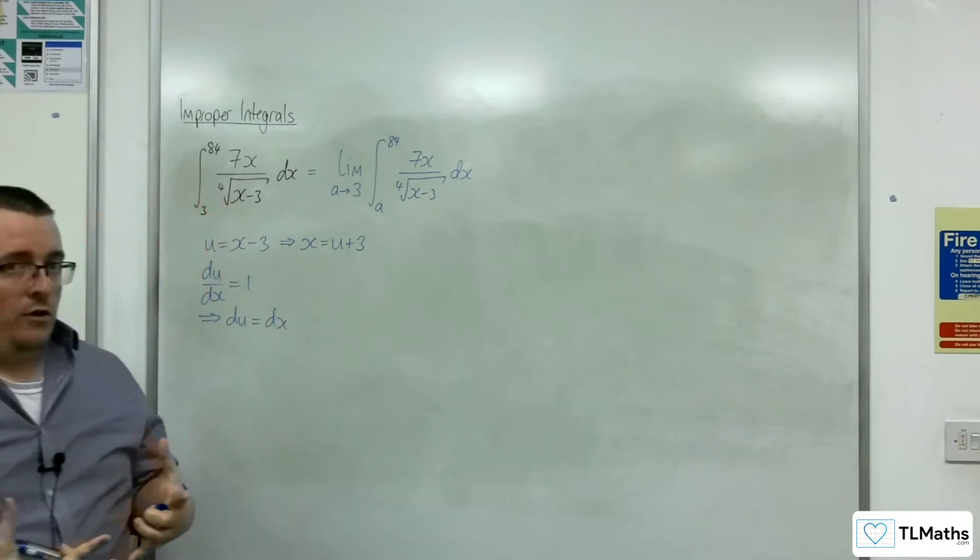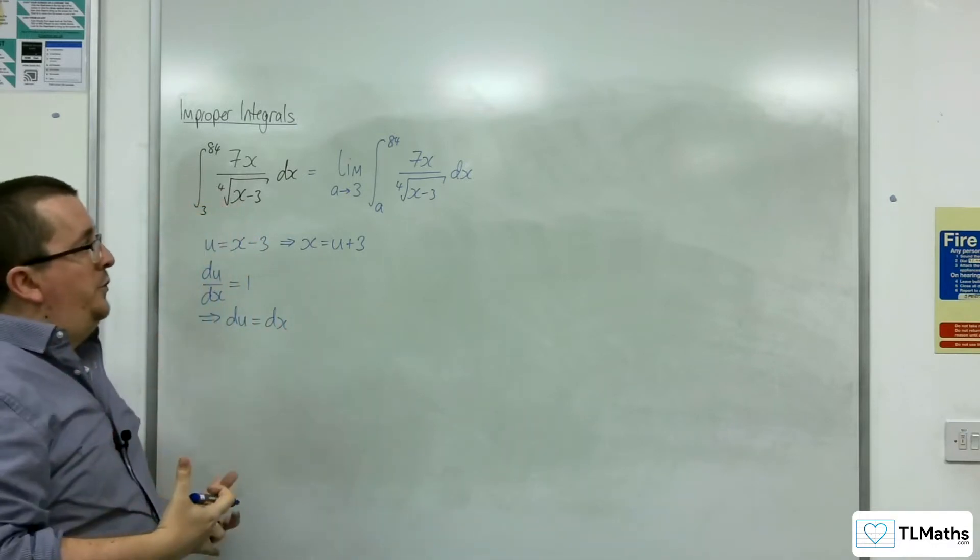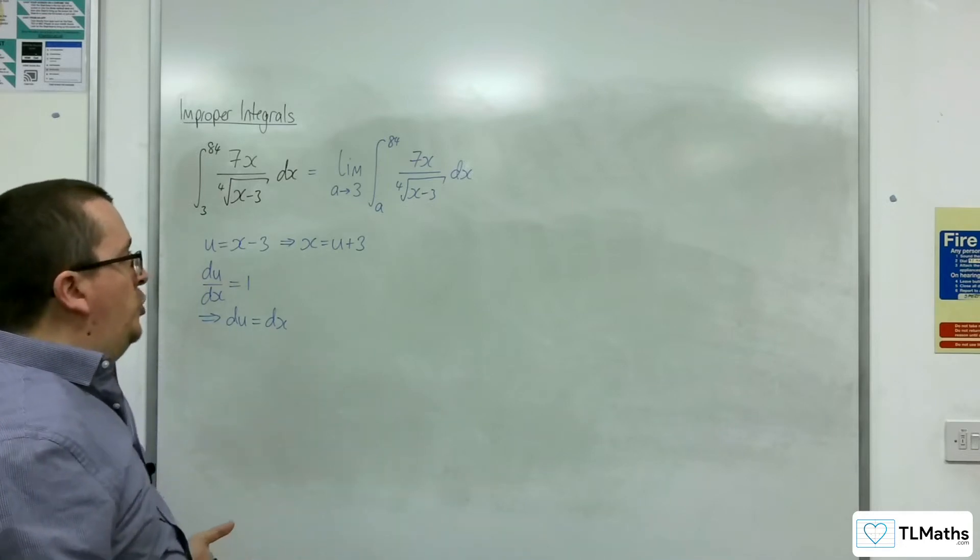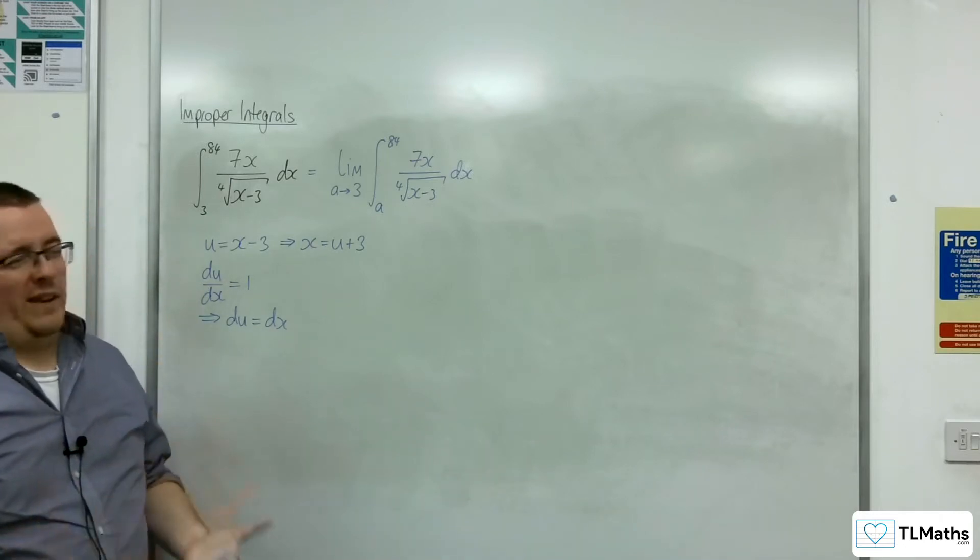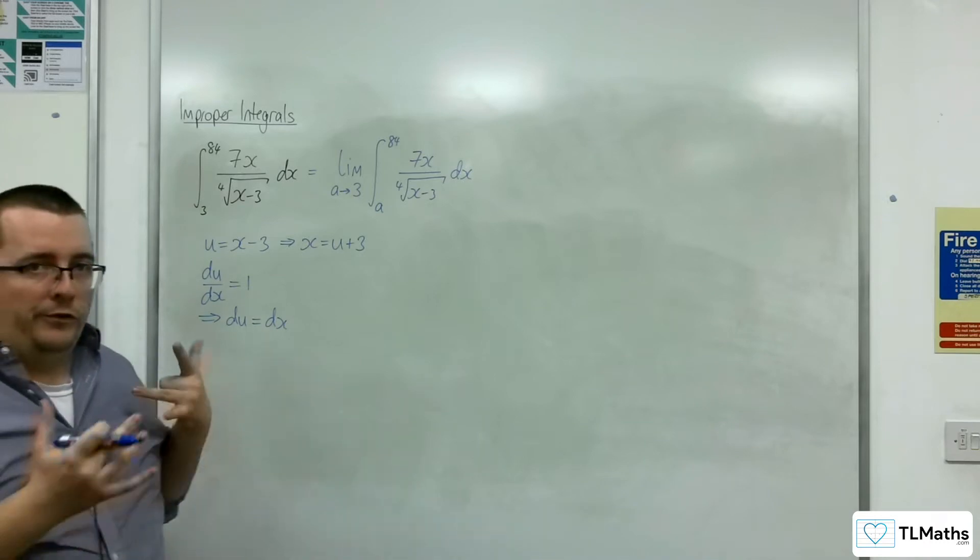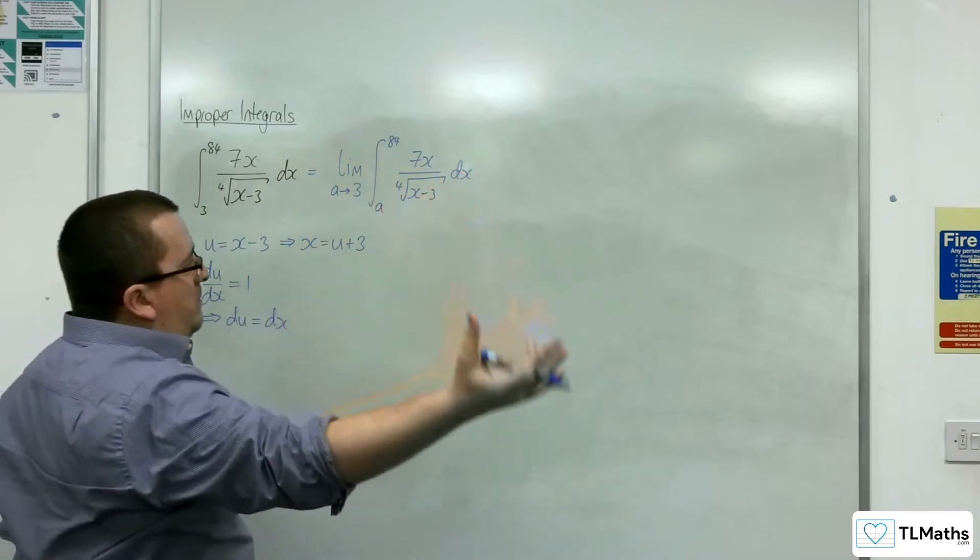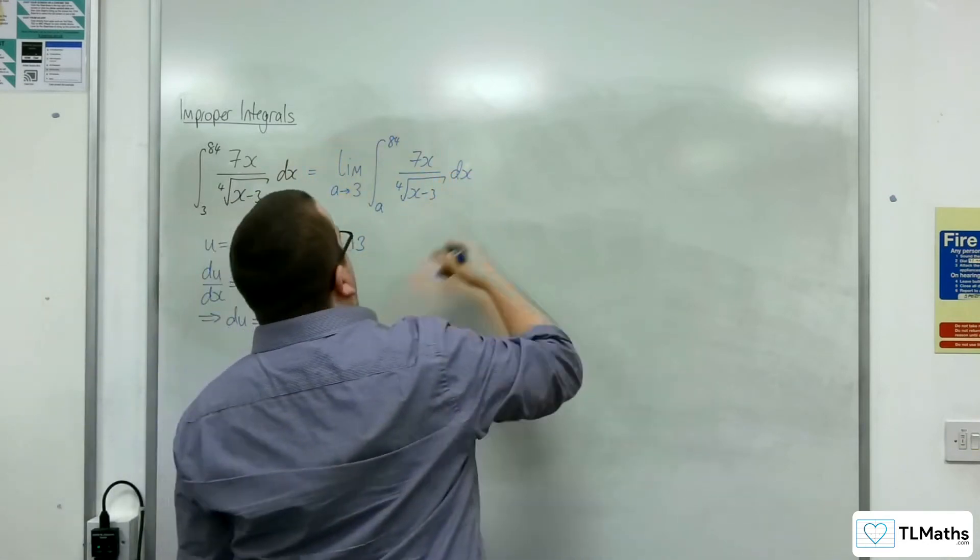Now, I would ordinarily, my method for this is to change the limits when I do integration by substitution. But that's not a particularly good idea at this stage because we've got the a involved. So I'm going to leave that alone. What I'm going to do is once I've done the integration, I'm going to substitute back in and use the old limits.